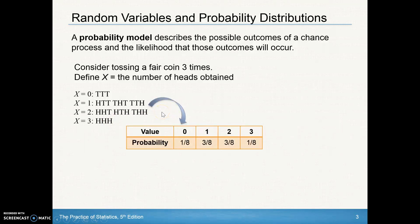We can create a probability model for this. The different outcomes we could get are zero, one, two, or three heads. Each of these events has its own unique probability. To get zero heads — tails, tails, tails — that happens one out of eight times. One head is three out of eight, two heads is three out of eight, and three heads is one out of eight. All probabilities should be between zero and one and add up to one. One-eighth plus three-eighths plus three-eighths plus one-eighth equals eight-eighths, or one. So this is a legitimate probability model.